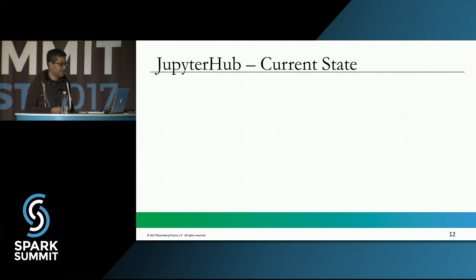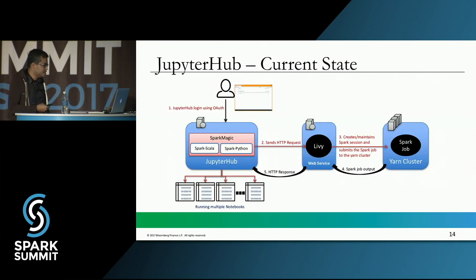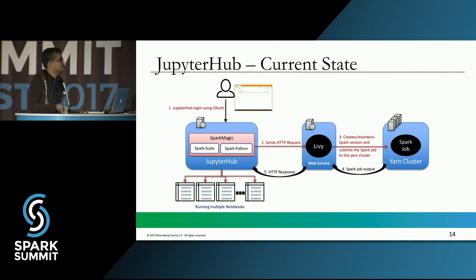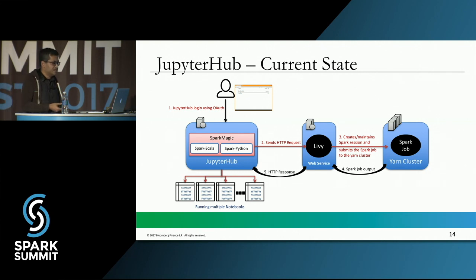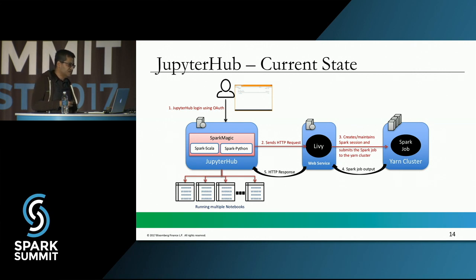Let's look at how JupyterHub, SparkMagic, and Livy work in their current state. A user opens their browser and logs into the JupyterHub URL to create a notebook. The browser talks to JupyterHub, submitting an HTTP request, which is forwarded to the SparkMagic kernel. SparkMagic forms an HTTP request and submits it to Livy. Livy creates and maintains the Spark sessions and submits the job to the cluster. Once done, the output goes back through Livy, SparkMagic, JupyterHub, and is rendered in the browser.